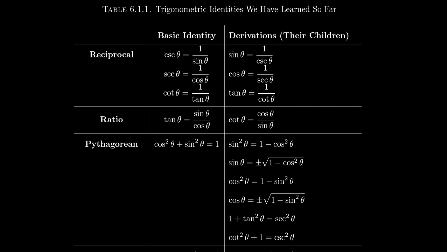The name comes from the fact that these are reciprocal statements. We've learned previously that cosecant is the reciprocal of sine — that is, cosecant θ = 1/sin θ. Likewise, secant is the reciprocal of cosine: secant θ = 1/cos θ. And lastly, cotangent is the reciprocal of tangent: cotangent θ = 1/tan θ. This gives us the reciprocal family.